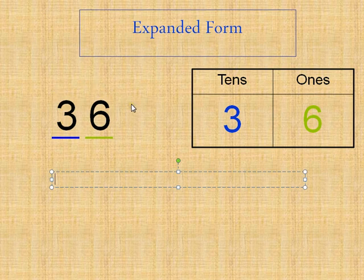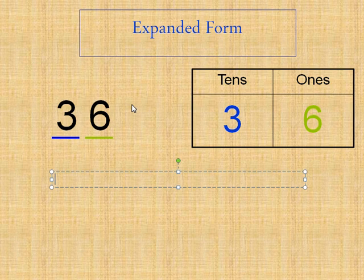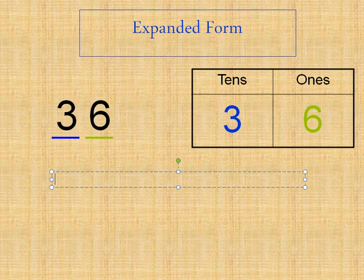I don't need an equal sign necessarily because it's not an addition problem. It's just using addition signs, writing an addition expression to show the value of this number by adding the value of the digits. This number I have underlined blue and green is 36, three tens and six ones.